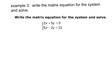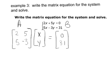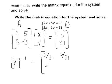Example: write the matrix equation for this system and solve. A is 2, 5, 5, negative 3; X and Y; and B is 0 and 31. Plug A and B into your calculators. Once A is entered, select it and raise it to the negative 1 power using the negative 1 button by the matrix menu, and hit enter. You'll get some decimals, which represent the entries of A inverse.